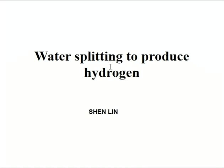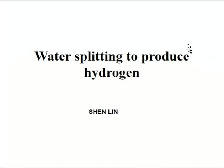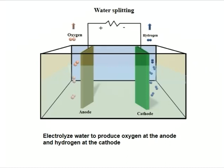My presentation is about water splitting to produce hydrogen. Electrochemical hydrogen evolution is the decomposition of water into hydrogen and oxygen. During electrolysis, oxygen is generated at the anode and hydrogen is generated at the cathode. The electrochemical reaction is realized on the basis of the redox reaction, so the electrochemical reaction is actually another form of the redox reaction.